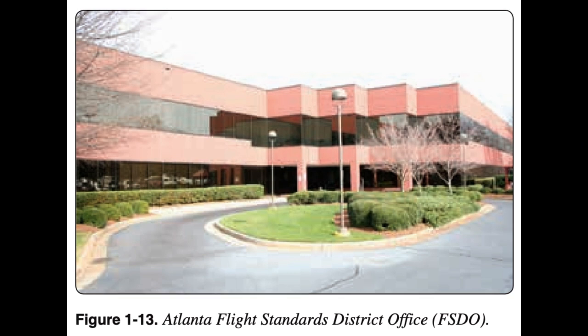Flight Standards District Office (FSDO). The FAA has approximately 80 FSDOs. These offices provide information and services for the aviation community. FSDO phone numbers are listed in the telephone directory under Government Offices, DOT, FAA. Another convenient method of finding a local office is to use the FSDO locator available at www.faa.gov. In addition to accident investigation and the enforcement of aviation regulations, the FSDO is also responsible for the certification and surveillance of air carriers, air operators, flight schools and training centers, and airmen including pilots and flight instructors. Each FSDO is staffed by Aviation Safety Inspectors (ASIs), who play a key role in making the nation's aviation system safe.